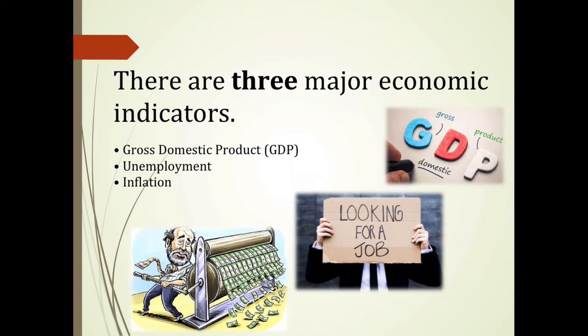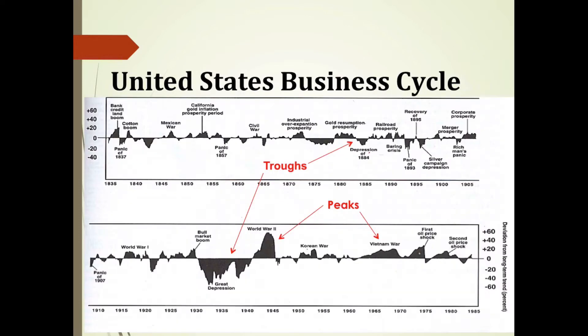Economists continually use this data to examine the health and state of our economy. By looking at the long-term business cycle in the United States between 1835 and 1985, we can see many examples of both good times and bad — troughs, or times when the overall economy has failed, as well as peaks, or times when the overall economy has been successful. Consider the pattern of when troughs and peaks occur, and try to identify examples that may answer whether one causes or results from the other.